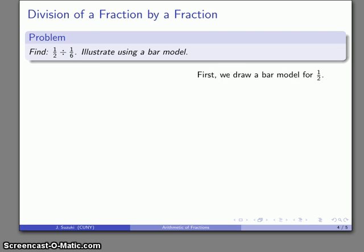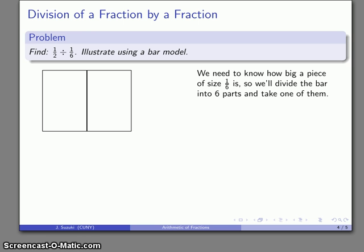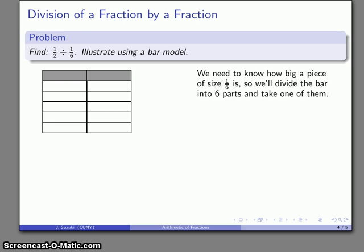So let's draw our one-half, look something like that. And continuing our pattern of dividing both horizontally and vertically, I want to take a look at how big those one-six pieces are. So we'll divide the bar into six parts, and we'll take one of them. So remember, one-half is this entire left side of the bar. One-six consists of these two pieces here.